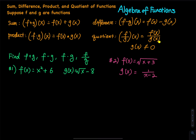Since g of x is in the denominator, you have to specify that g of x cannot be equal to zero. Let's take a look at the first example.